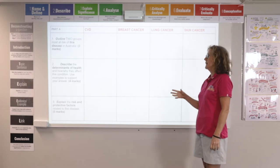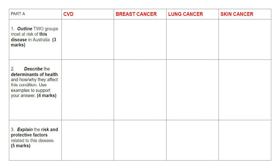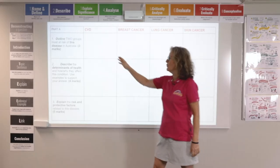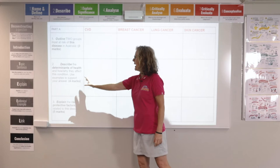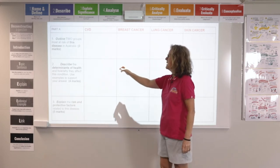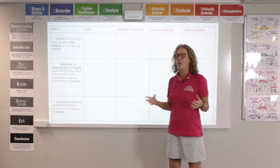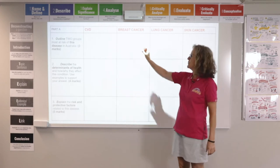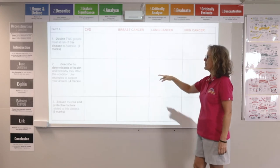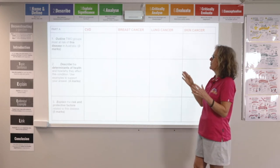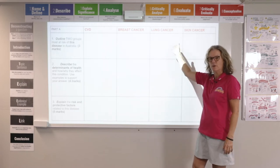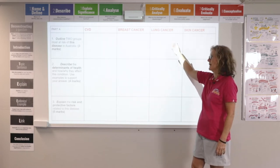Here's a really basic table that will help you organise your thoughts. You don't know which one of these chronic illnesses you are going to be looking at — it will be drawn out of a hat on the day that you do your in-class. You do know the questions, so just put some thoughts down in the different boxes and that will help you organise your thoughts so you're ready to answer whichever question you get allocated on the day.